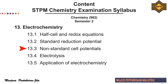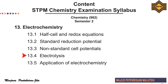The last topic for semester 2 is Topic 13, electrochemistry. This topic is divided into five subtopics: 13.1 electrochemical cell and redox equations, 13.2 standard reduction potential, 13.3 non-standard cell potential, 13.4 electrolysis, and 13.5 application of electrochemistry.